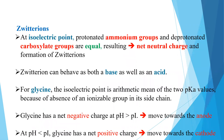Now, what is a zwitterion? At the isoelectric point, protonated ammonium groups are deprotonated, and the protonated ammonium groups and deprotonated carboxylate groups are equal, resulting in a net neutral charge and the formation of a zwitterion. A zwitterion can behave as both a base and an acid. For glycine, the isoelectric point is the arithmetic mean of the two pK values, because of the absence of an ionizable group in its side chain.